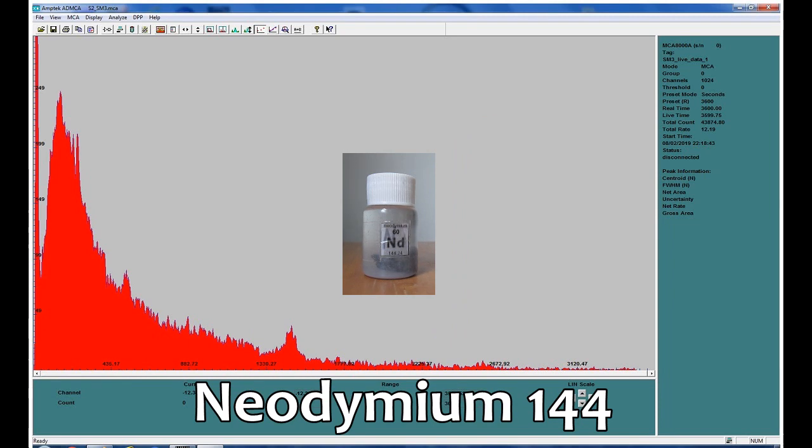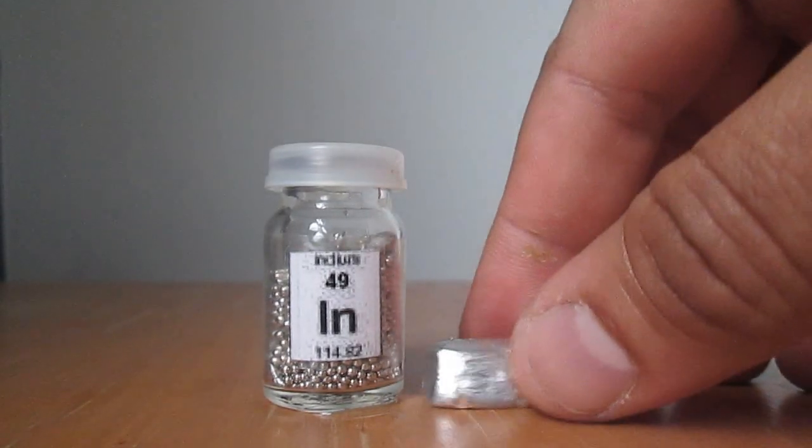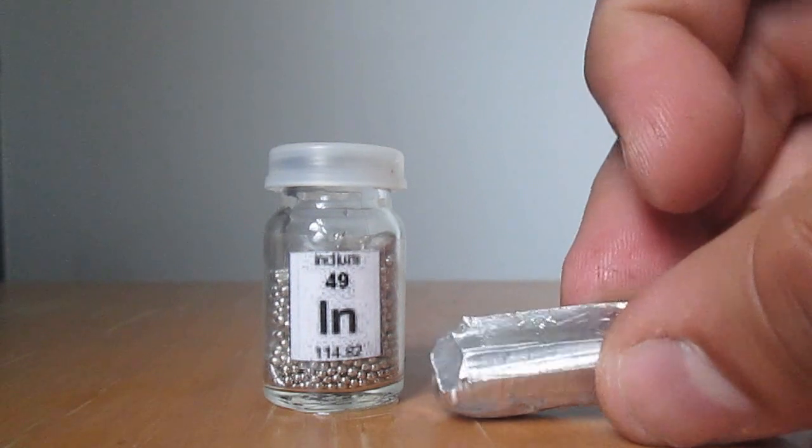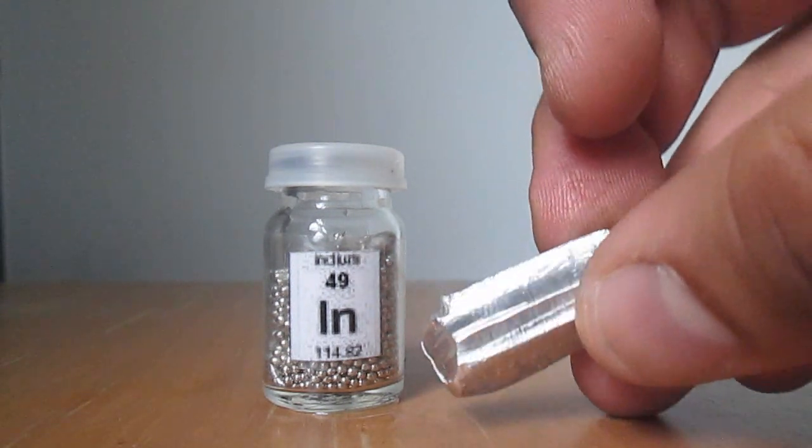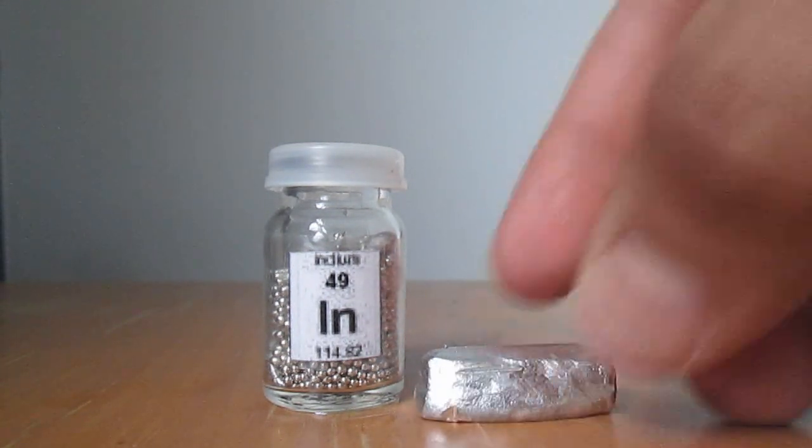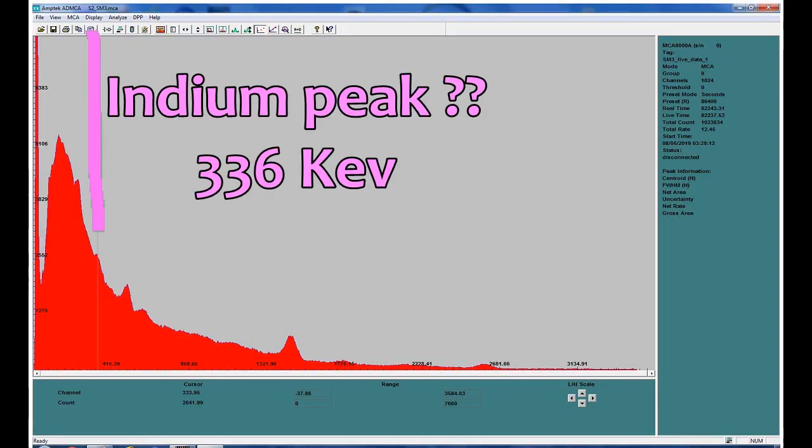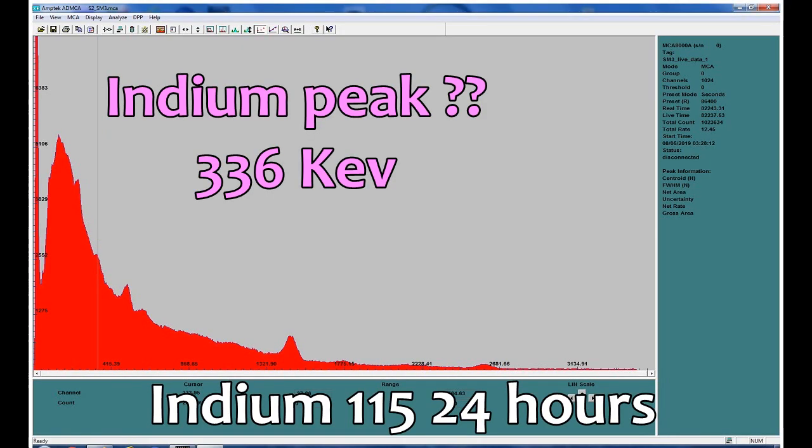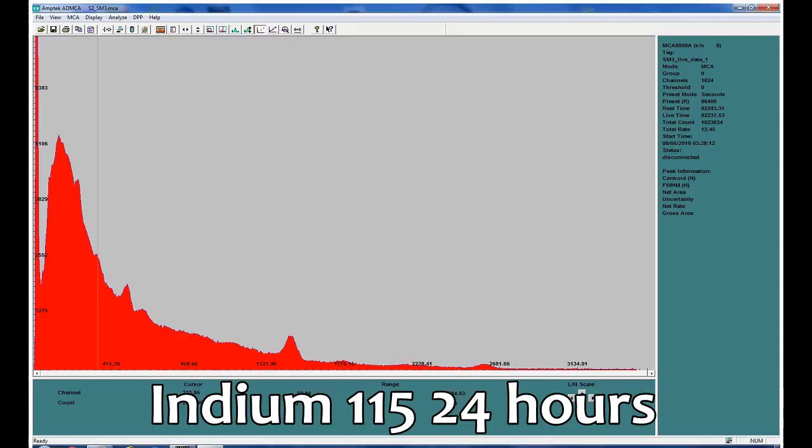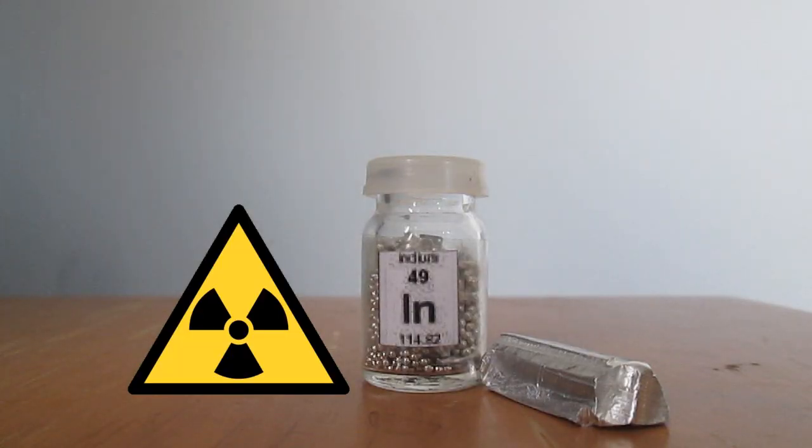I also tried samarium-147, neodymium-144, and indium-115. Indium is interesting because it's one of those elements where the radioactive isotope makes up the majority of the isotope ratio, but it's hard to tell if I picked up anything here. Even after 24 hours of acquisition, and with a half-life of 441 trillion years, it's getting difficult to even call this isotope radioactive.